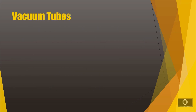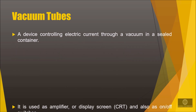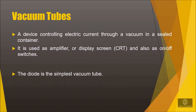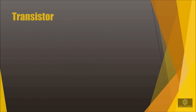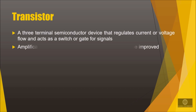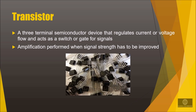A vacuum tube is a device controlling electric current through a vacuum in a sealed container. It's used as an amplifier or as an on-off switch. The diode is the simplest vacuum tube, which is similar to a light bulb with an extra electrode in it. Tubes with three electrodes are called triodes, and those with four electrodes are known as tetrodes. A transistor is a three-terminal semiconductor device that regulates current or voltage flow and acts as a switch or gate for signals. Whenever the signal strength has to be increased, amplification is needed, and this is done by the transistor.